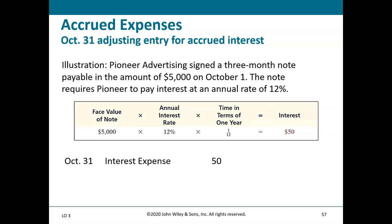Example — accrued interest: Pioneer Advertising signed a three-month note for $5,000 on October 1st at an annual interest rate of 12%. To calculate interest: face value × annual rate × time = $5,000 × 12% × 1/12 = $50. The adjusting entry is: debit Interest Expense $50, credit Interest Payable $50 — recording the expense and the liability.